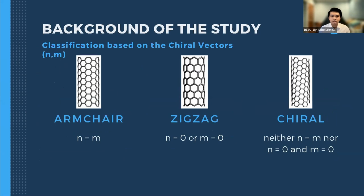Here are images showing the different classifications of CNTs based on their chiral vectors. When N equals M, the carbon nanotube is said to have an armchair structure. When N equals zero or M equals zero, it is said to have a zigzag structure. And when it is neither armchair nor zigzag, then it is said to have a chiral structure.